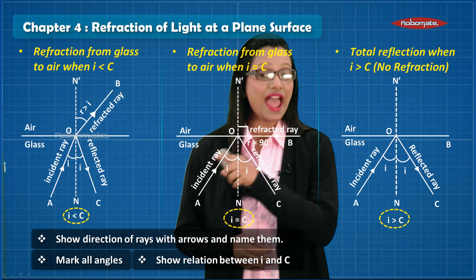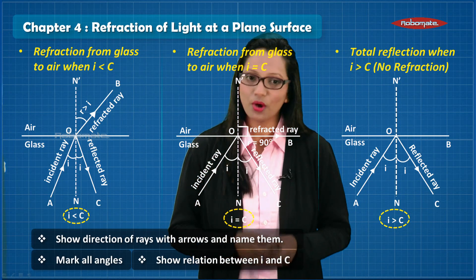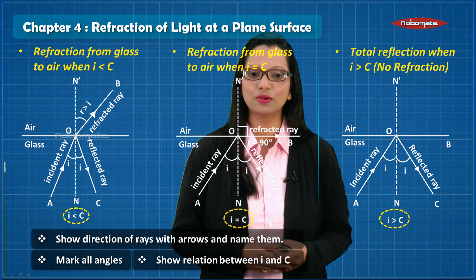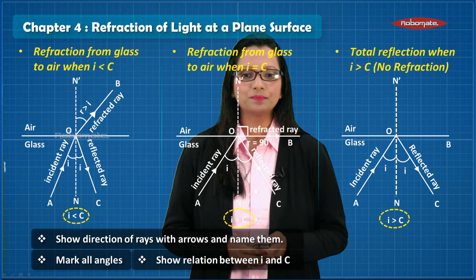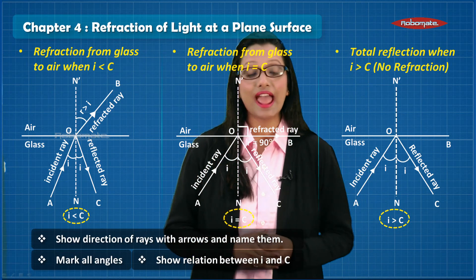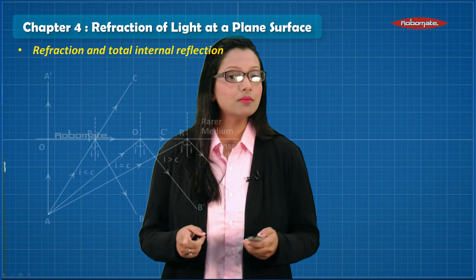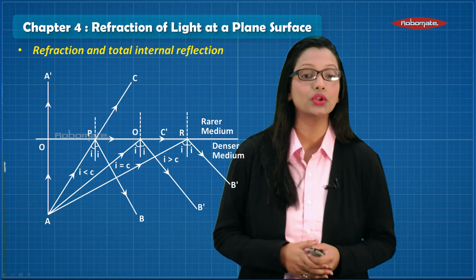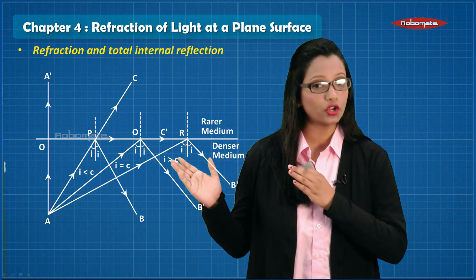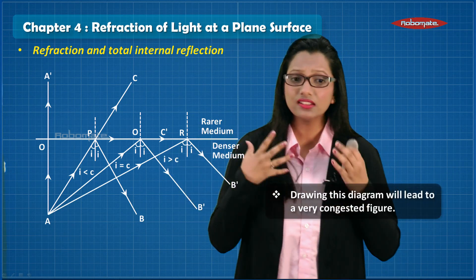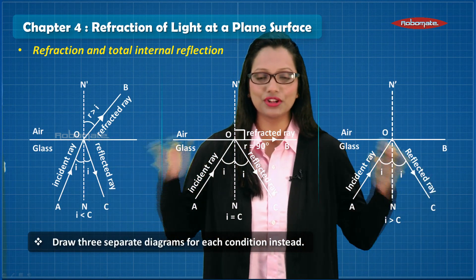One important fact: the angle of incidence and angle of reflection are both written as i — this is only to show the first law of reflection, that angle of incidence equals angle of reflection. Throughout this chapter, r represents the angle of refraction. Also, you may come across a textbook diagram showing refraction and total internal reflection with all three cases in one diagram — avoid this, as it leads to a very congested diagram. Draw three separate diagrams for the three cases.